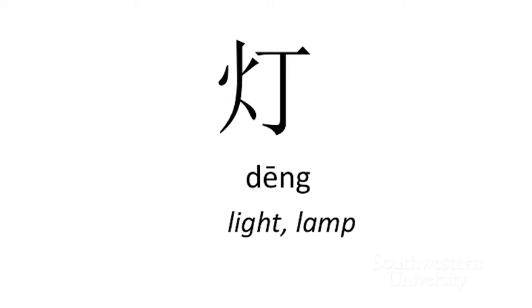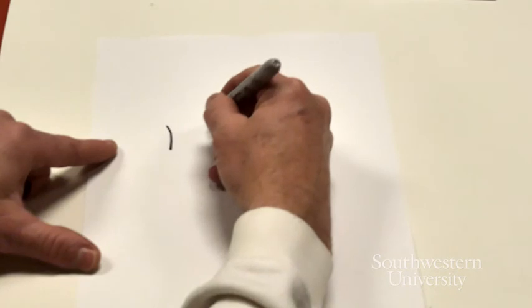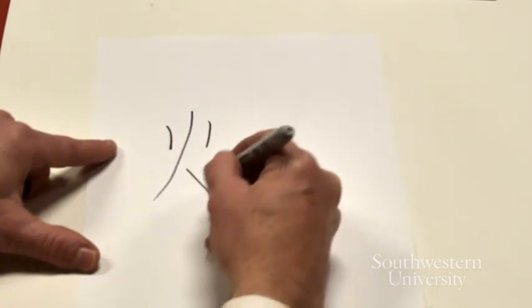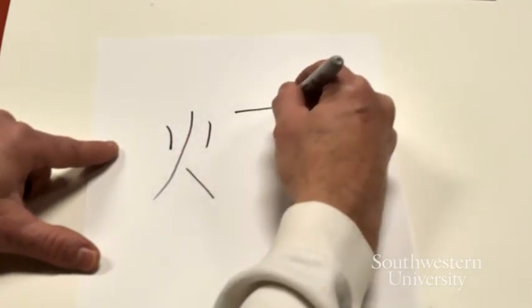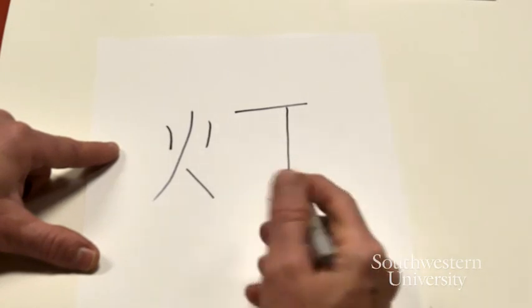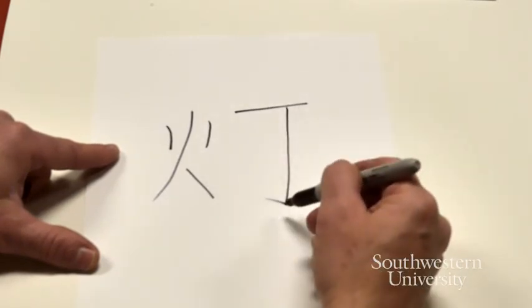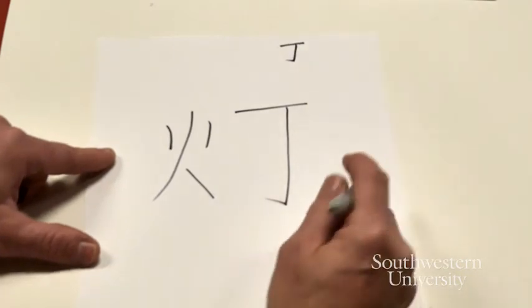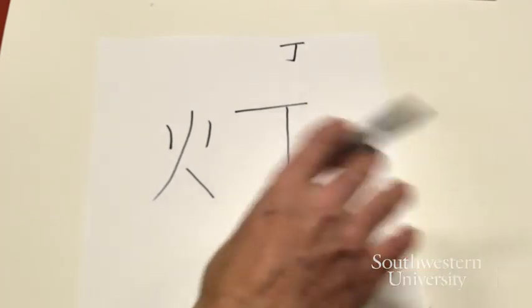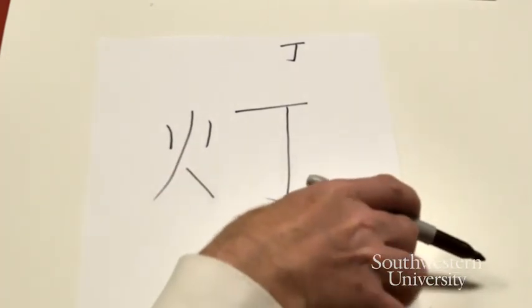Deng, is fire. Huo, dian, dian, pie, dian. Heng, shu go. So the right-hand side is phonetic. Ding. Ding is a depiction of a nail. Deng, of a lamp.